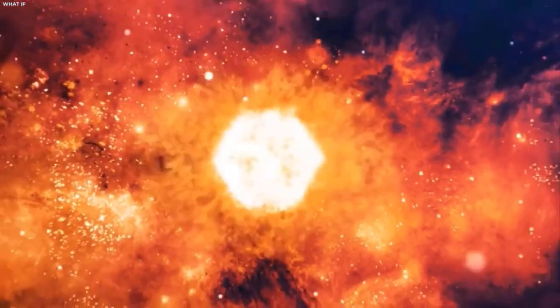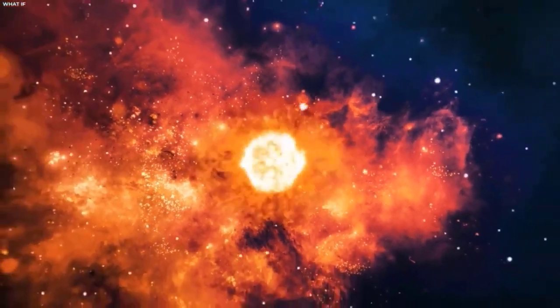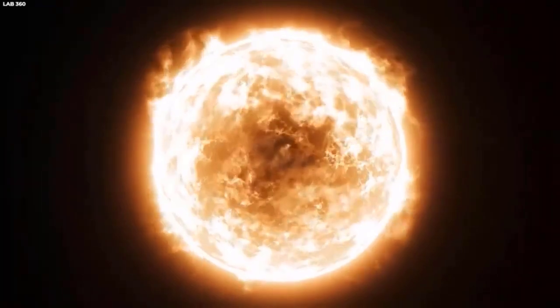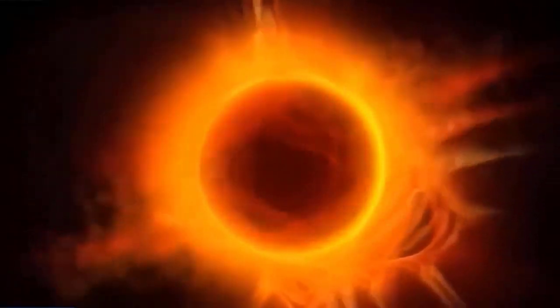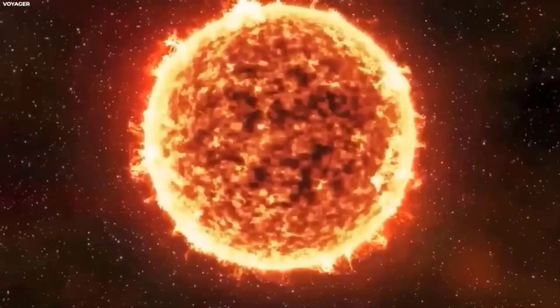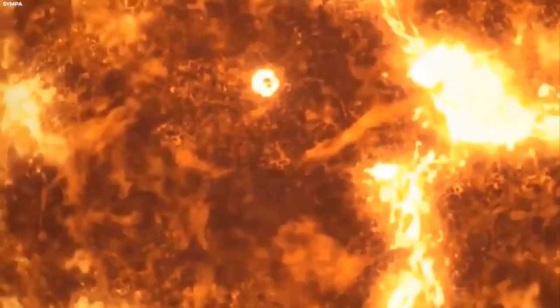Supernova explosions serve as the grand finale for extremely massive stars. When these stars exhaust their core's helium, red giants initiate the process of converting carbon and oxygen into neon and magnesium, which in turn transforms into silicon through burning. As the stars progress, their cores become filled with iron. This iron accumulation in their cores triggers a supernova.